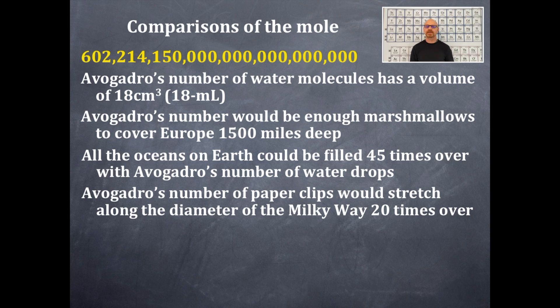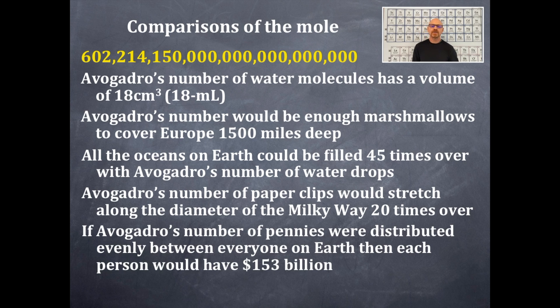The number of Avogadro's paper clips would stretch along the diameter of the Milky Way 20 times over. Oh my gosh. And if Avogadro's number of pennies were distributed evenly between everyone on earth, then each person would have received $153 billion U.S. dollars.